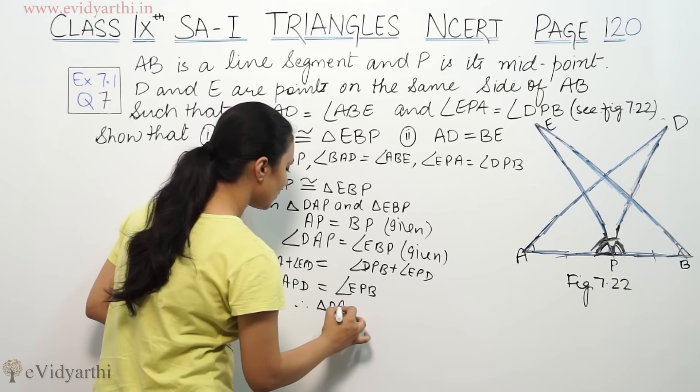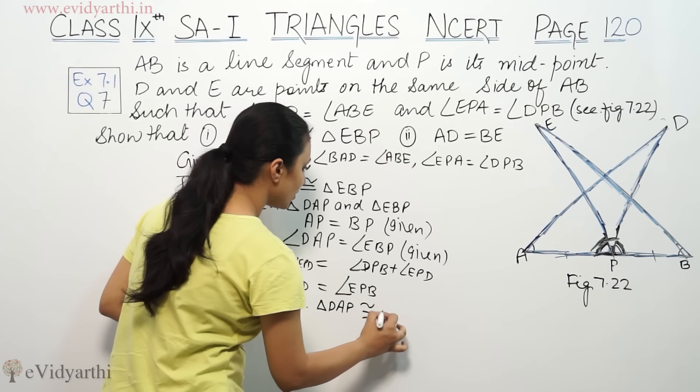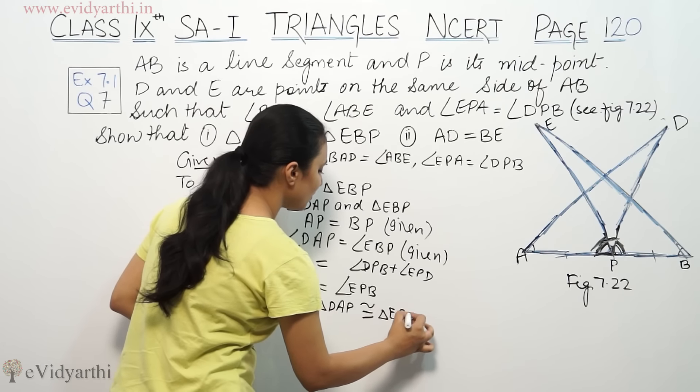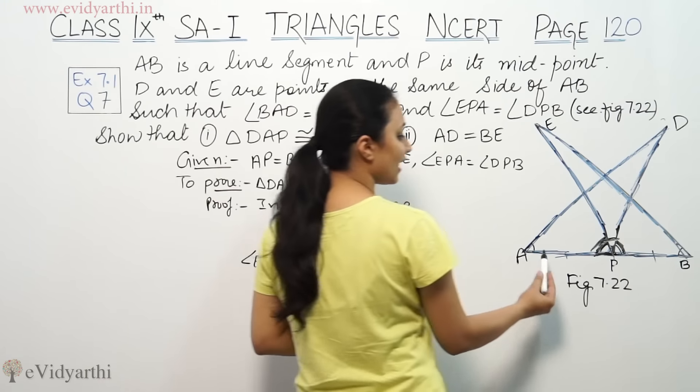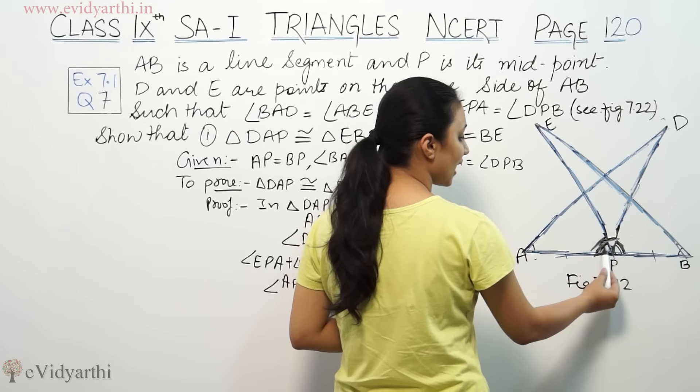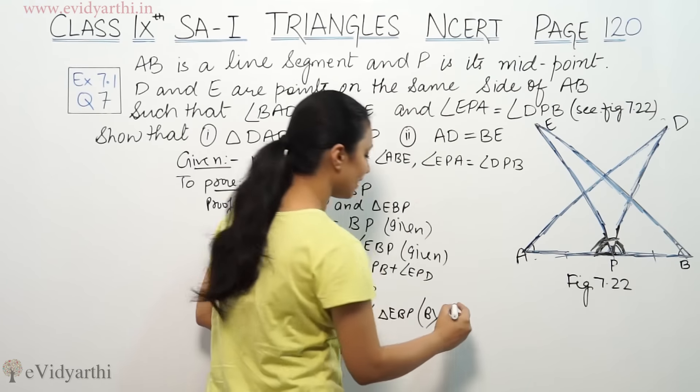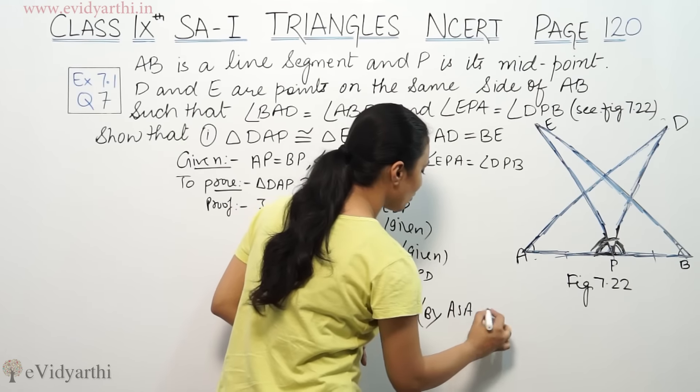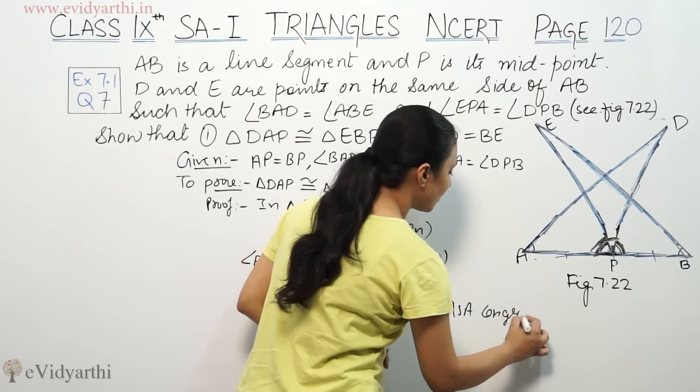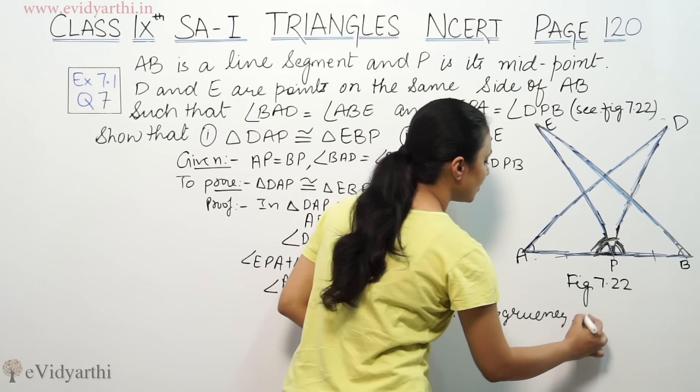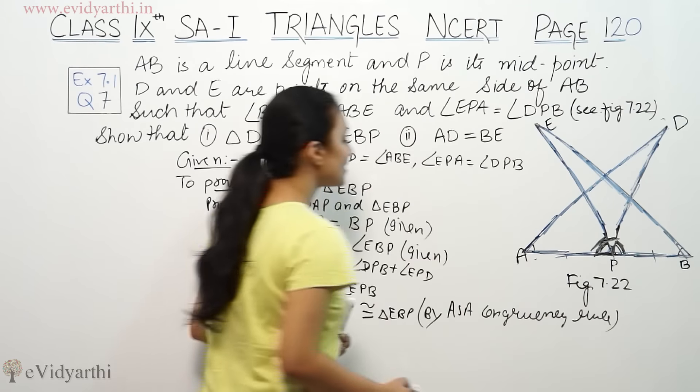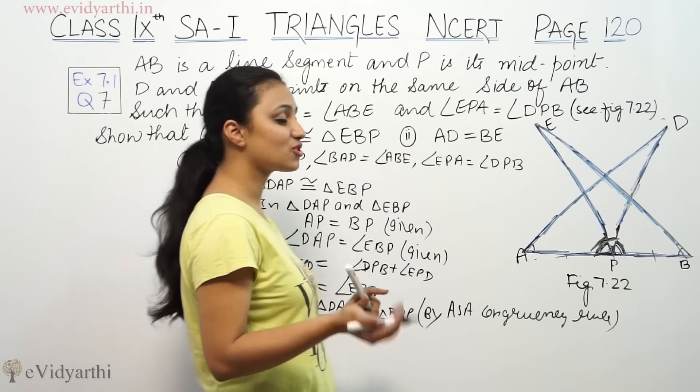Therefore, triangle DAP is congruent to triangle EBP by angle, side, angle, by ASA congruency rule.